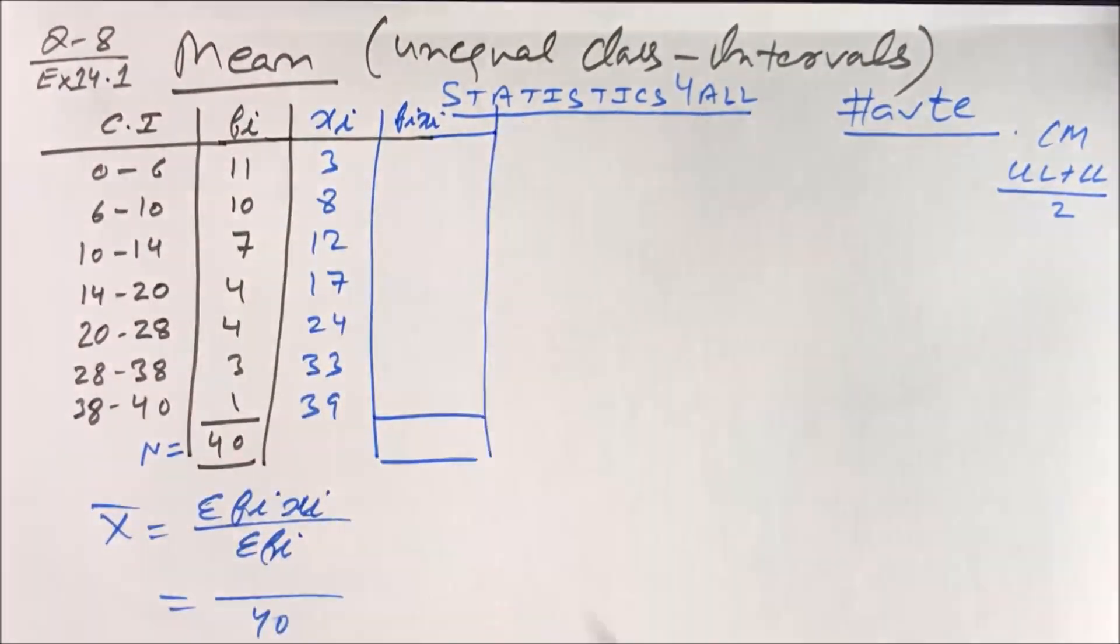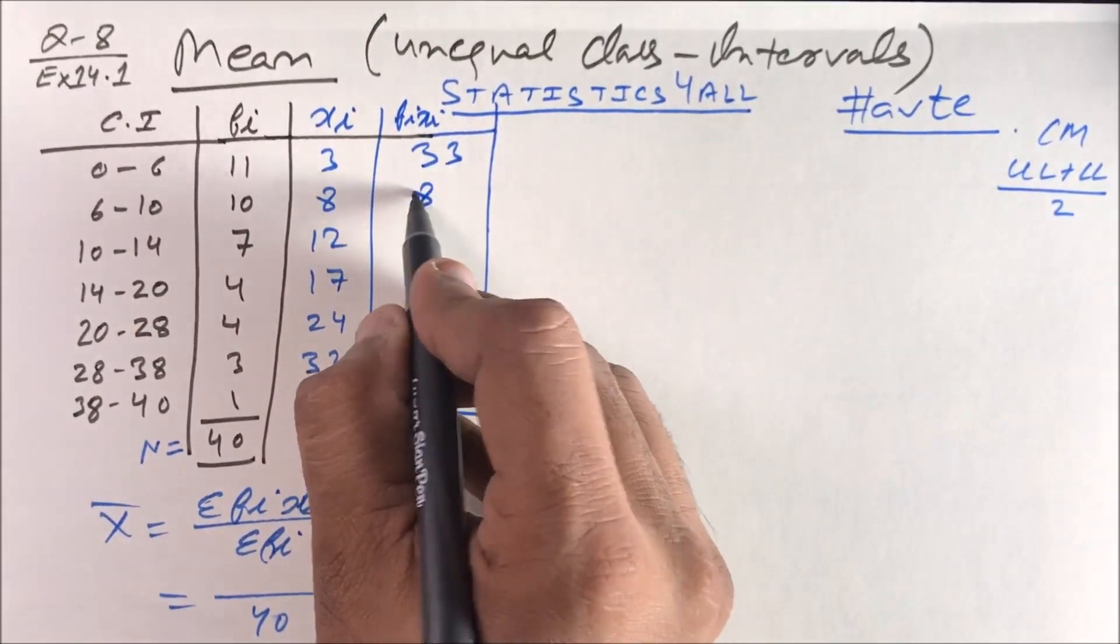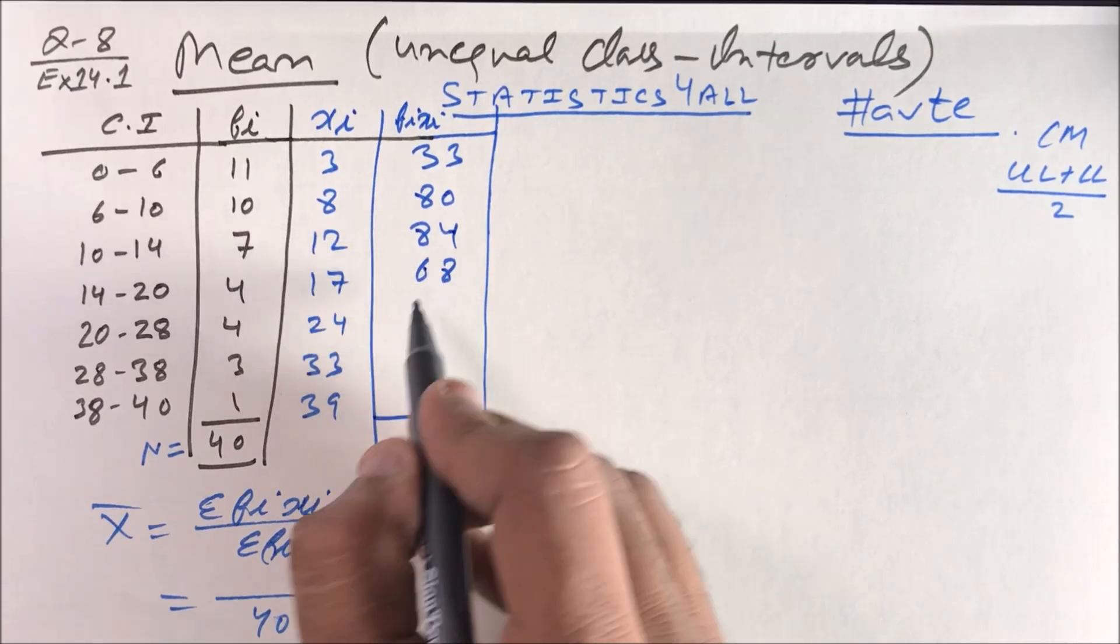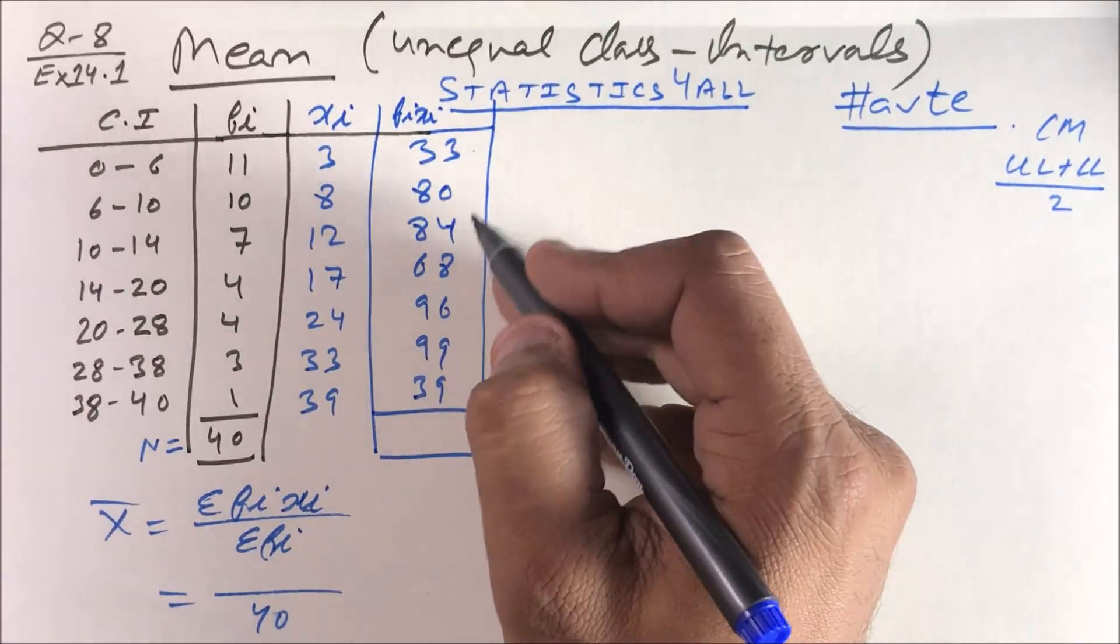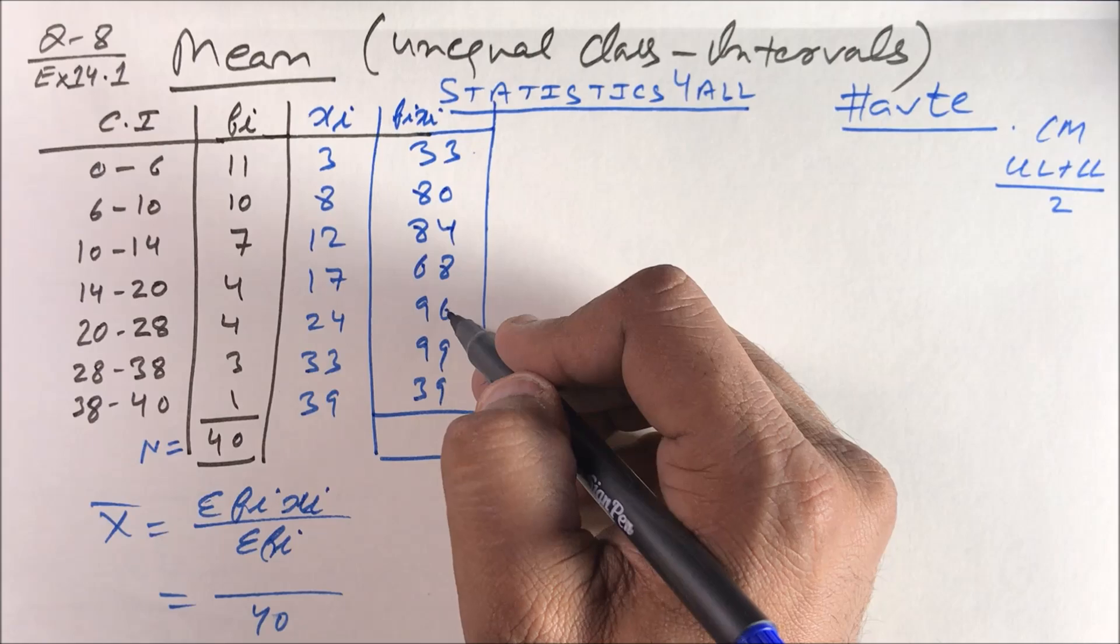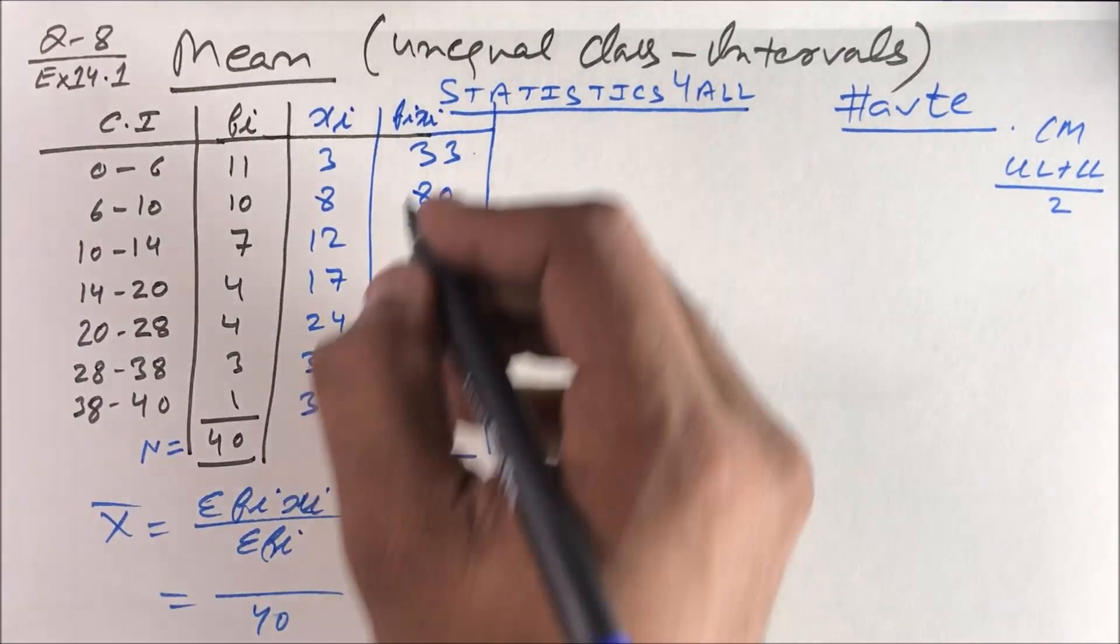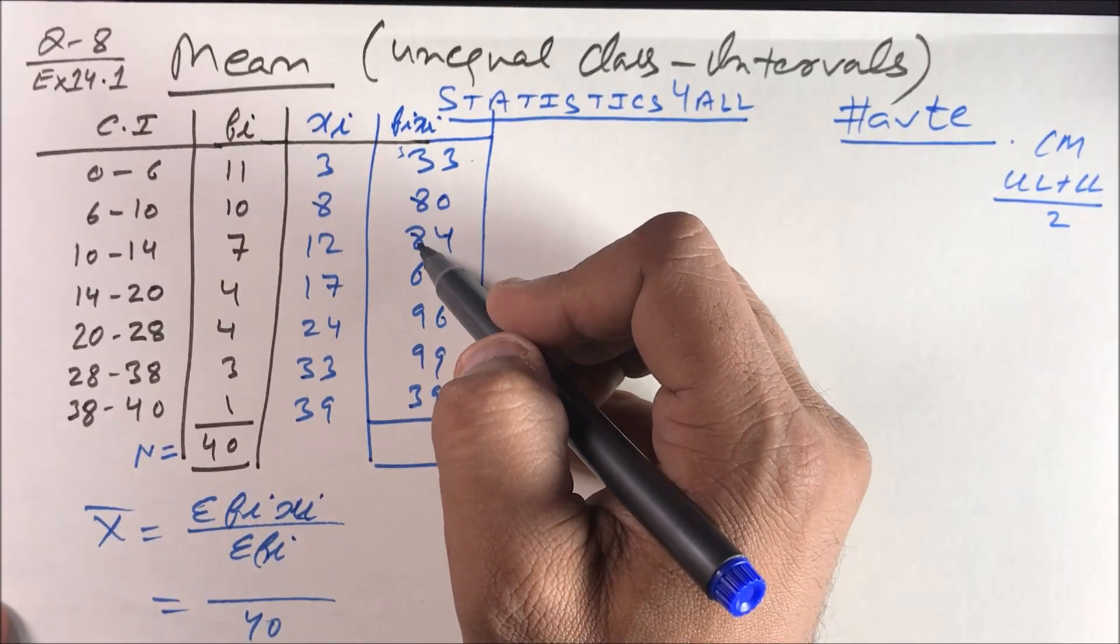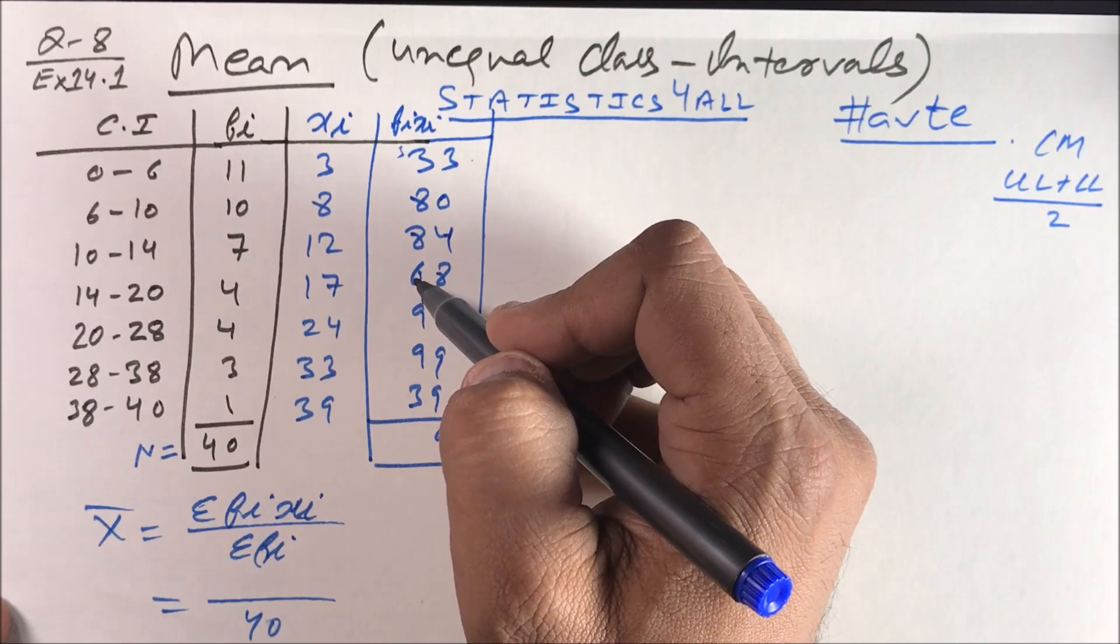How to do it? Just check: 11 into 3... and 39. You have to total them. This is 7, 7 plus 8 is 15, plus 15 is 30, plus 9 is 39. Three carry over, 3 plus 3 is 6, plus 8 is 14, plus 8 is 22, plus 6 is 28, plus 12 is 40, plus 9 is 49.